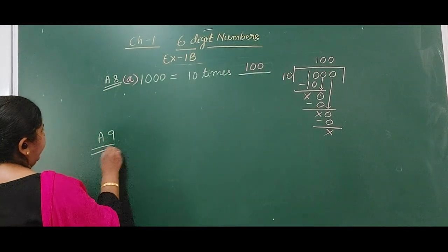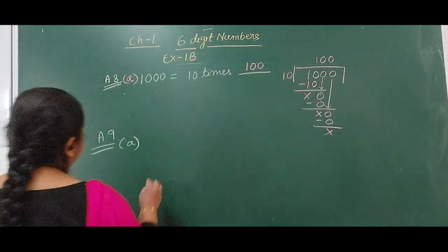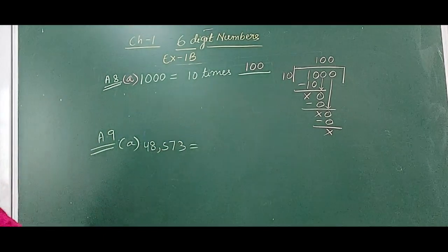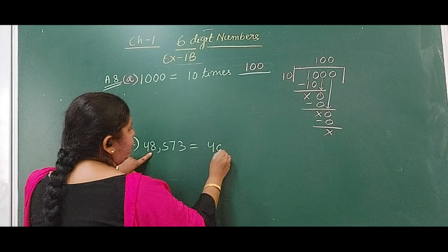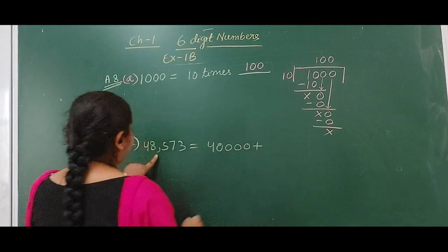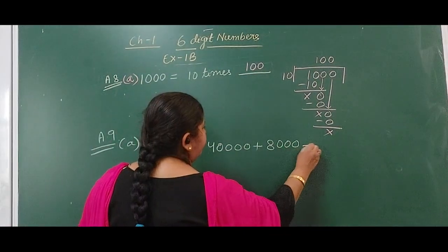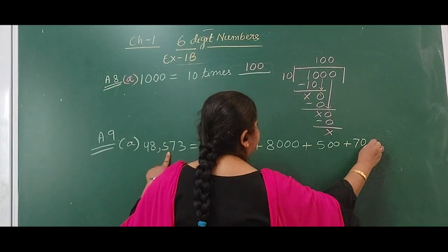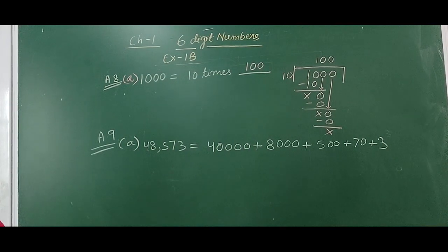Now we have a bit A from another question. The number is 48,570. How will we write it in expanded form? First write 4 and the rest are 4 digits, so 40,000. Plus then 8 with 3 digits after it, so 8,000. Plus 500, plus 70, plus 0. This completes Exercise 1B. All of you complete the remaining bits of this exercise for homework.